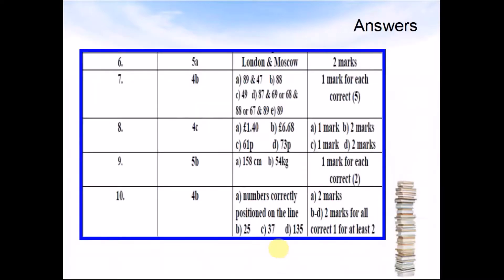Question 6: London and Moscow. Question 7b: 89 and 47. 88. 49. 87 and 69. 68 and 88. 67 and 89.